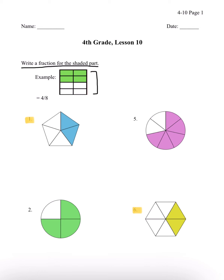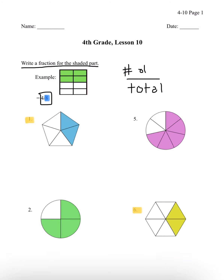So if we count, there's 1, 2, 3, 4, 5, 6, 7, 8. Which is why we have 8 at the bottom, which is the total. And as you can see here, we have 4 shaded that are green, which is why we have 4 out of 8. So the denominator — the bottom — is going to be our total. And the numerator, which is the top, is going to be the shaded part — how many shaded parts.